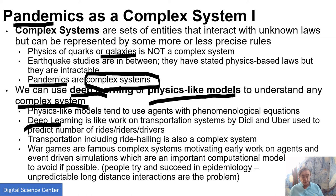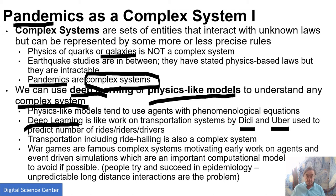Deep learning for complex systems is like the work done in transportation system lectures, where DiDi, Uber, and USC looked at the set of riders, rides, and drivers as a complex system superimposed on another complex system — the transportation network of roads. They used deep learning to evolve it. Transportation is a complex system.